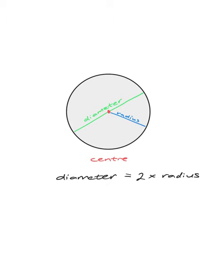A quick note about language: radius is the singular. And if we wanted to talk about more than one radius, we might think it would be 'radiuses', but actually the way we say it in the plural is 'radii'.